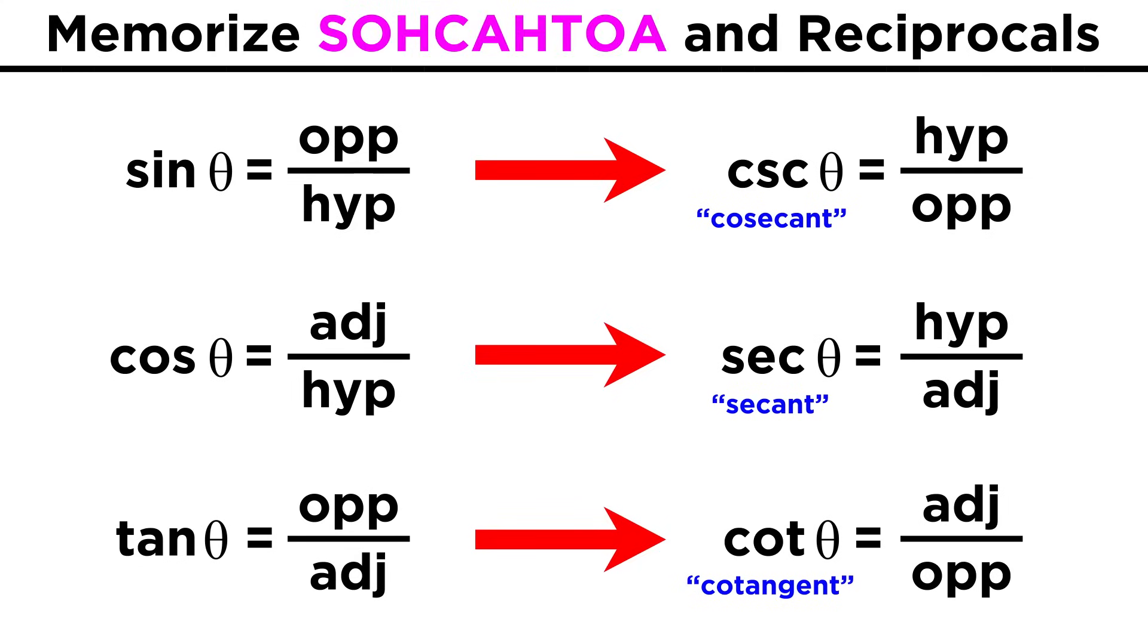So we definitely have to memorize SOHCAHTOA, and then we just have to memorize which functions are the reciprocals of these three, since we can just flip these ones to get the others.